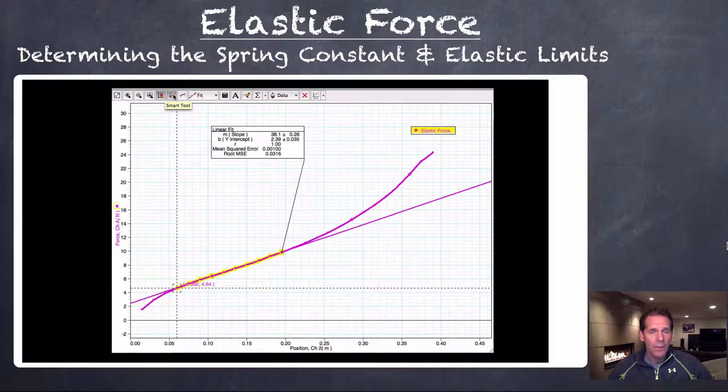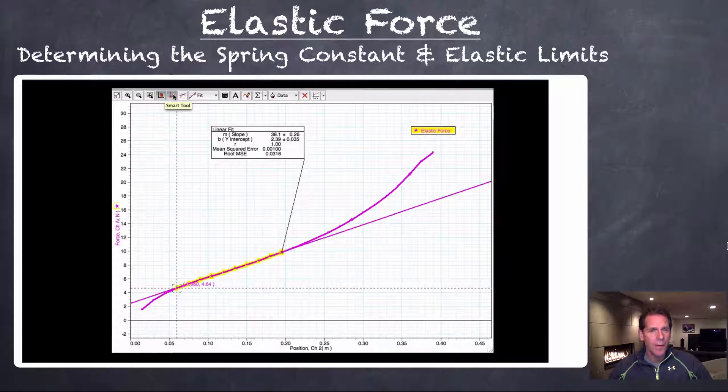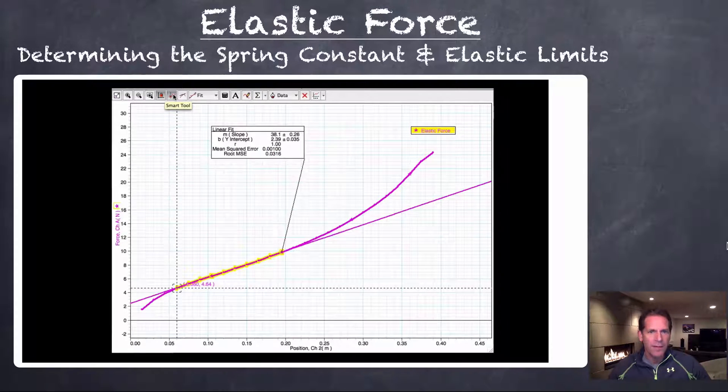So in our case, the one that I used, the slope came out to be approximately 38 newtons per meter, and that would be the spring constant for this elastic.